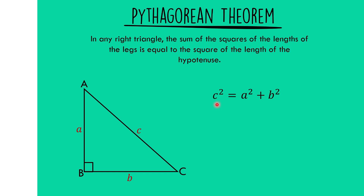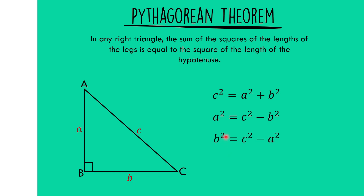If the hypotenuse is missing, we use the formula C squared equals A squared plus B squared. If side A is missing, we use A squared equals C squared minus B squared — the difference between the square of the hypotenuse and the other leg. If side B is missing, we use B squared equals C squared minus A squared.